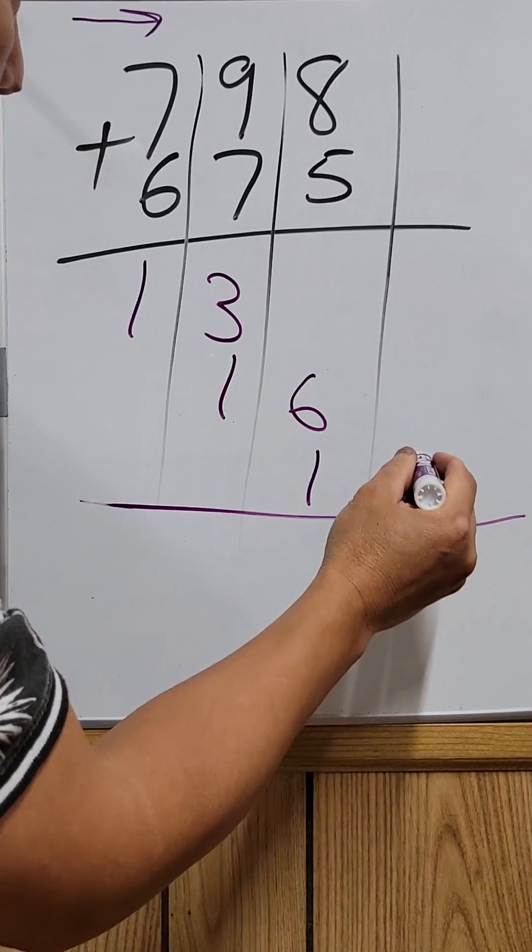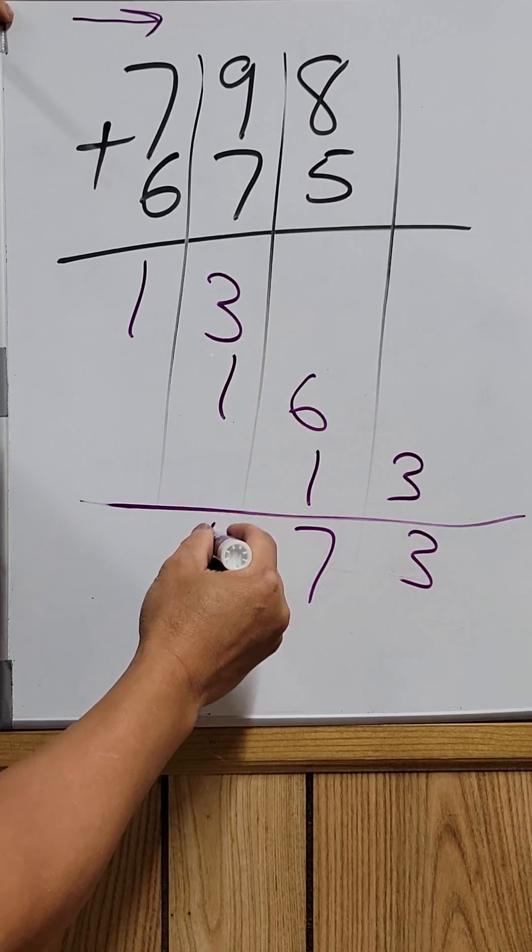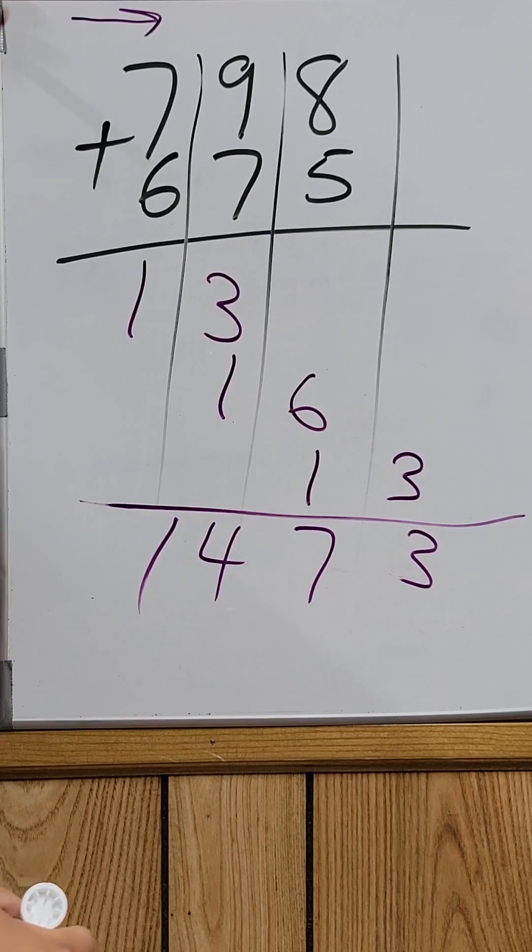So as you can see really fast, 3, 7, 4, 1. See how fast it is? Let's do another one.